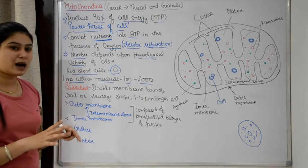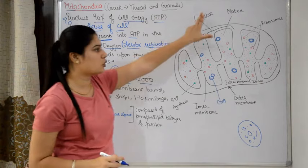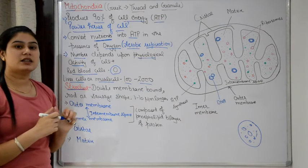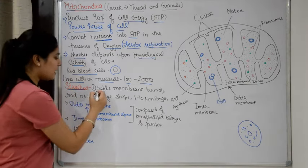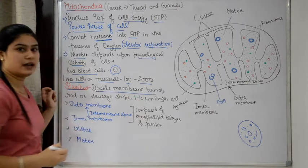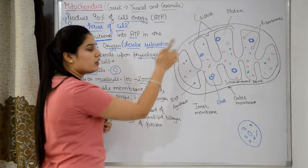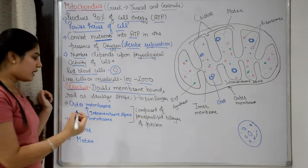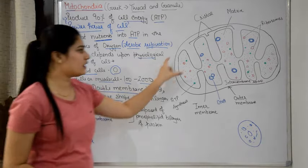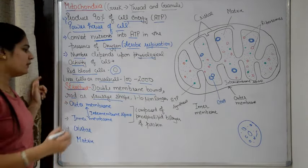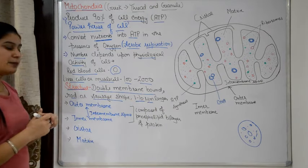Now we will talk about the structure of mitochondria. Like the nucleus, mitochondria is a double-membrane bound organelle — meaning there are two membranes, one outer and one inner. The shape of mitochondria is rod-shaped or sausage-shaped. The length of mitochondria is 1 to 10 micrometers.